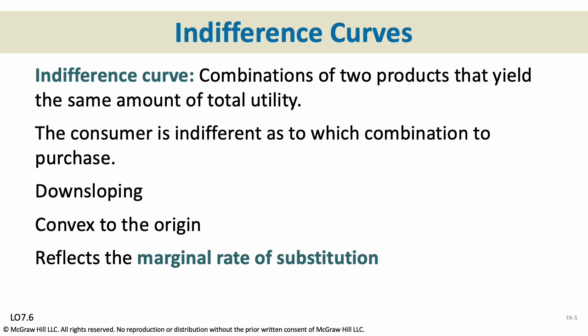An indifference curve is a combination of two products that yield the same amount of total utility, so the consumer is indifferent as to what combination to purchase. For example, a Big Mac and fries might give you the same utility as a Big Mac and chicken nuggets — you would be indifferent between those two combinations. The curve is downward sloping, convex to the origin, and it reflects the marginal rate of substitution.